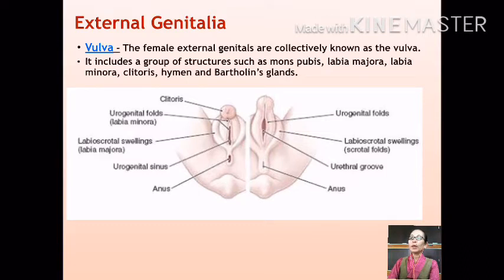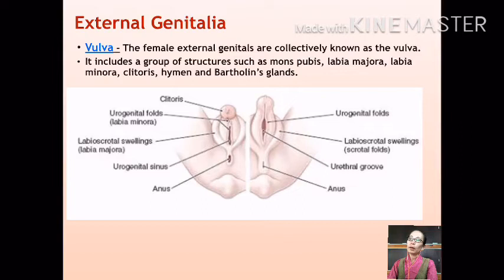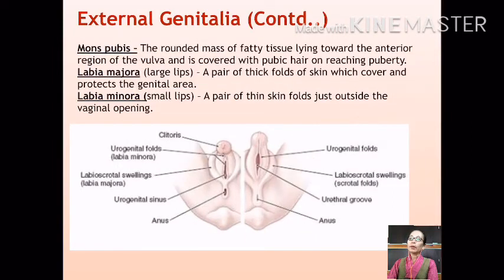The vulva includes a group of structures such as mons pubis, labia majora, labia minora, clitoris, hymen, and Bartholin's glands. The anterior fatty region of the vulva which gets covered with pubic hair on reaching puberty is called the mons pubis.